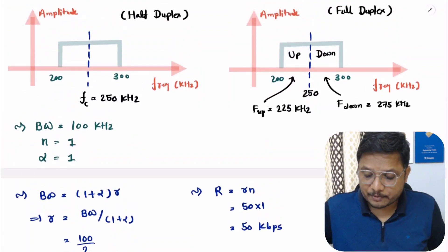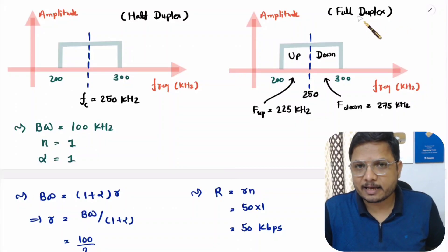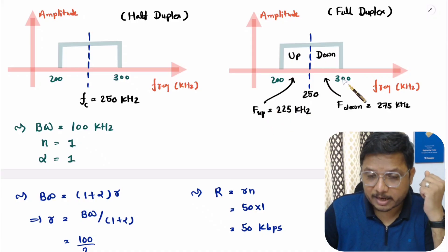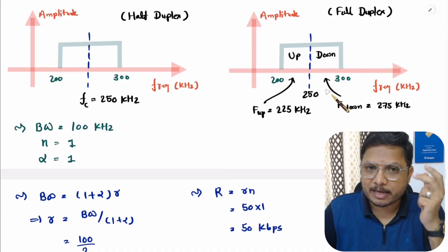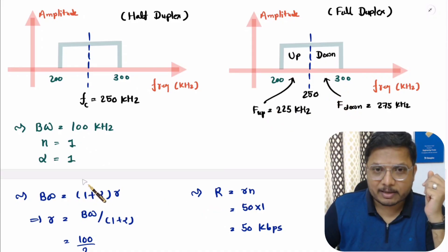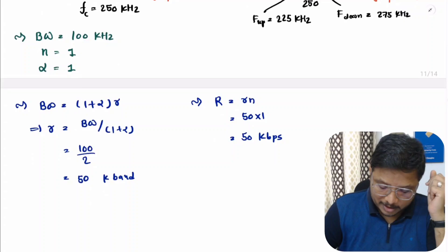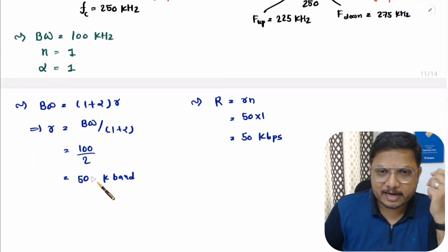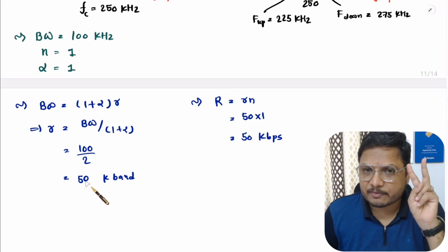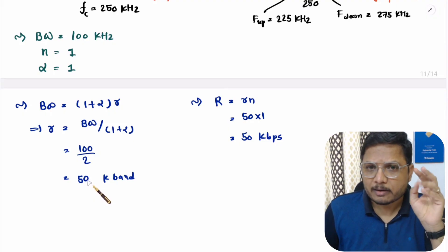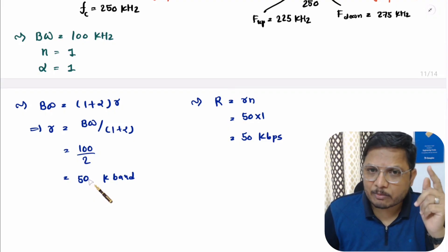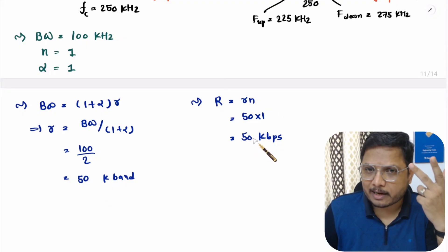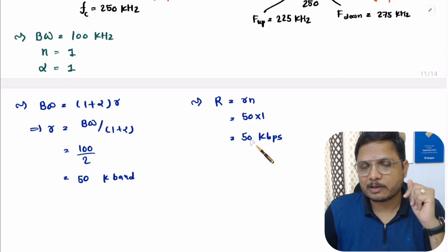And if you have full duplex communication technique, in that case for uplink and downlink you need to calculate separate baud rates. Obviously each will be half of the given calculation. The baud rate of 50 kilo baud gets divided into two segments, giving 25 kilo baud each, and bit rate will be 25 kbps for uplink and 25 kbps for downlink.